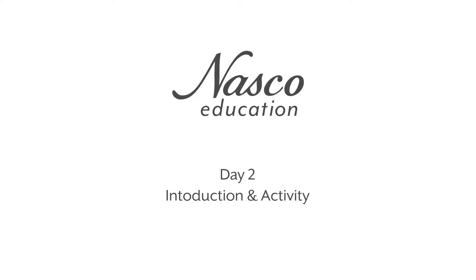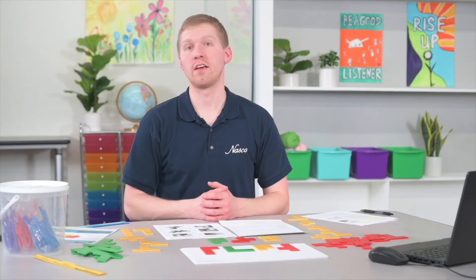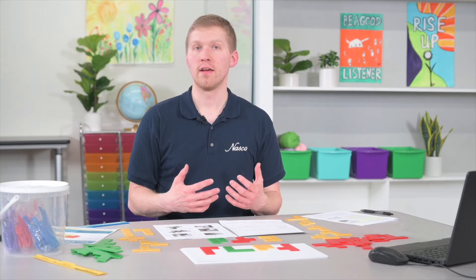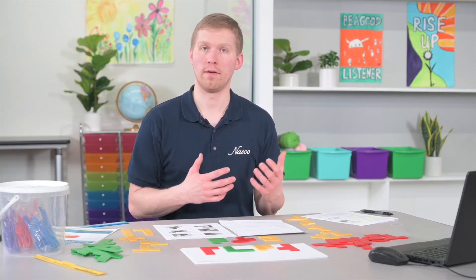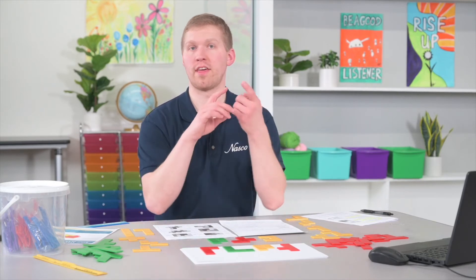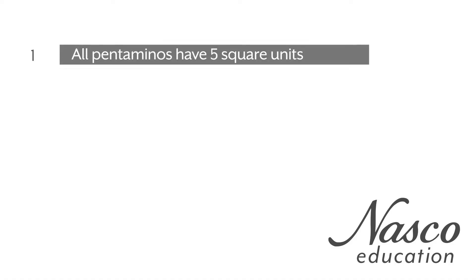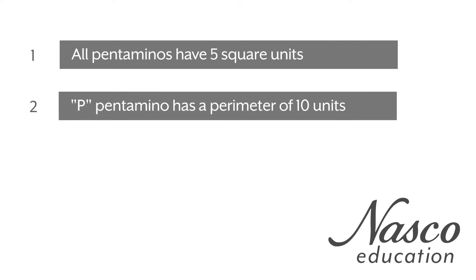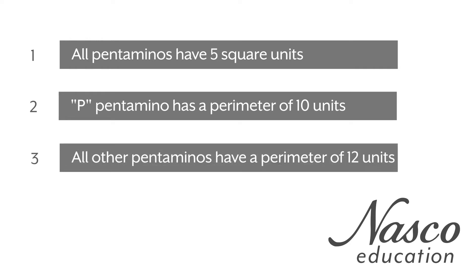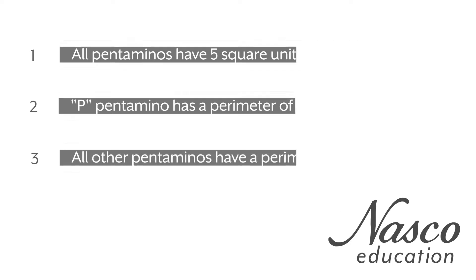For day two, the introduction and activity — the first thing you're going to want to do is recap what they've learned from day one. The three things are: one, all the pentominoes have an area of five square units; two, the P pentomino has a perimeter of 10 units; and three, all the other pentominoes have a perimeter of 12 units.